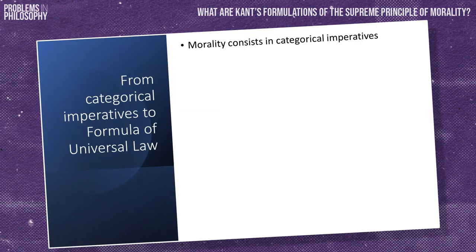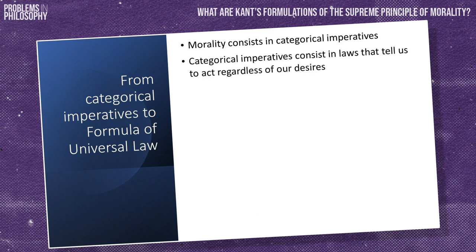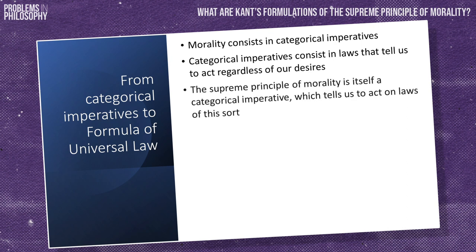So here in section 2, Kant doesn't try to explain how it can make sense for rational agents to act on categorical imperatives. Instead, he takes this for granted and tries to show how from the idea of morality involving categorical and not hypothetical imperatives, he can again derive the supreme principle of morality. He argues that we know morality must consist in categorical imperatives and that such imperatives tell us to act in ways which hold not because of our desires, but as laws that apply to us regardless of our desires.